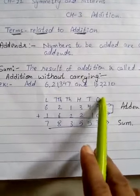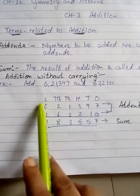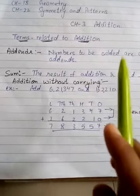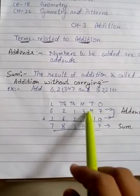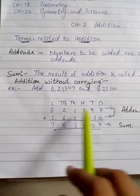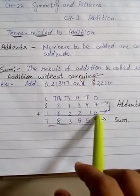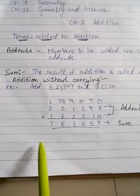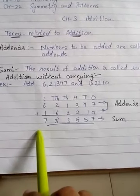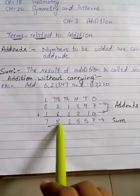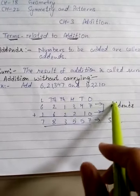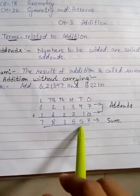Right-hand side, in ones place: 7, 4, 3, 1, 2, 6. Same with the other number: 0, 1, 2, 2, 6, 1. So the result is seventy-seven lakh eighty-three thousand five hundred fifty-seven. These numbers to be added are called addends, and the result of addition is called sum.